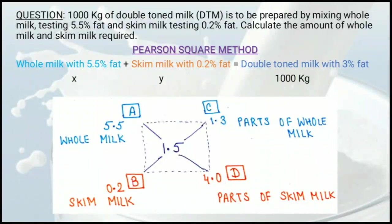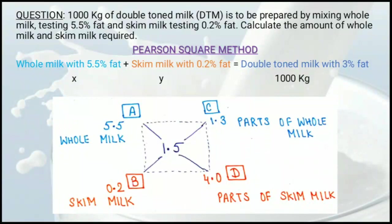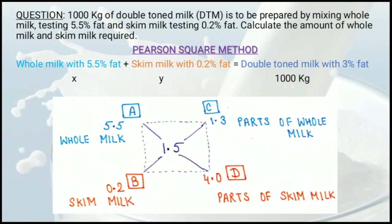I have written 1.5 at the center. At corner A, I write the fat content of whole milk: 5.5. At corner B, I write the fat content of skim milk: 0.2. Subtracting diagonally: 1.5 minus 5.5 gives 4, written at D. And 1.5 minus 0.2 gives 1.3, written at C.